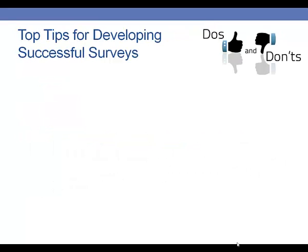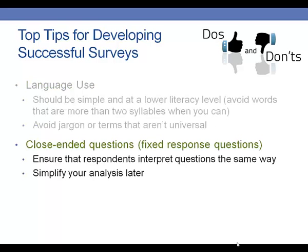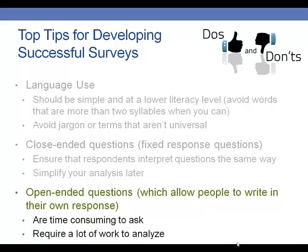When developing surveys, there are best practice tips to consider. Regarding language use: your language should be very simple and written to as low a literacy rate as possible. The simpler we keep our language, the less likely it is that people will be confused by our questions. One way to do this is to avoid words that are more than two syllables whenever possible, and avoid using jargon or terms that aren't universal. Close-ended or fixed-response questions help ensure respondents interpret questions the same way and simplify analysis. Open-ended questions are time-consuming to analyze, so keep surveys as close-ended as you can.